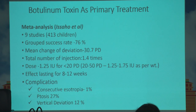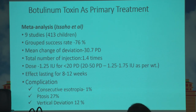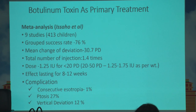One meta-analysis on Botox as primary treatment included nine studies. The group success rate was around 76%, and the mean change in deviation achievable with a single Botox injection — with a mean of 1.4 injections given — was around 30 prism diopters of correction. Dose varied according to body weight of the child, and the effect lasted for around three months. Known complications with Botox include consecutive exotropia, ptosis, and vertical deviations.